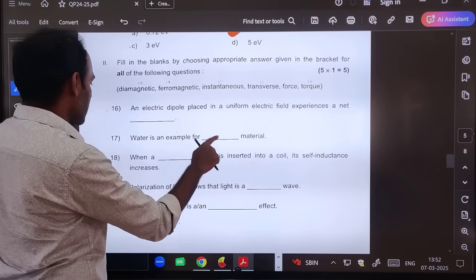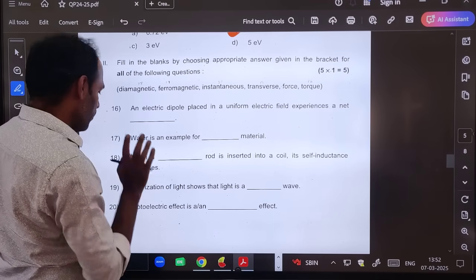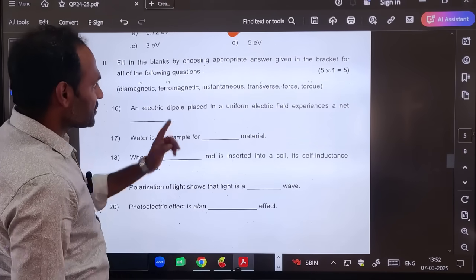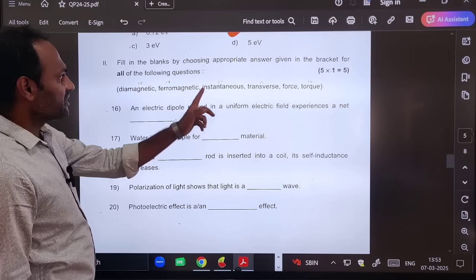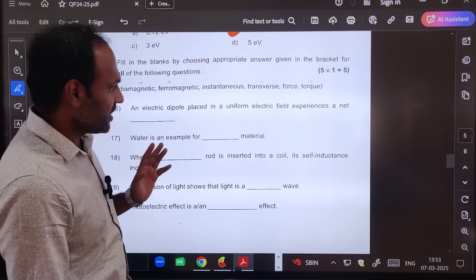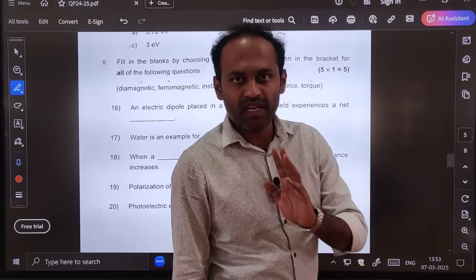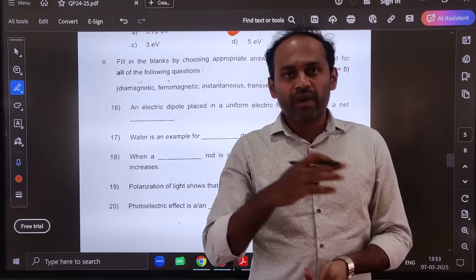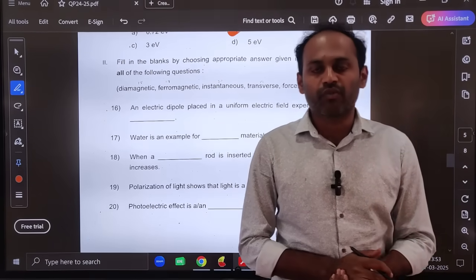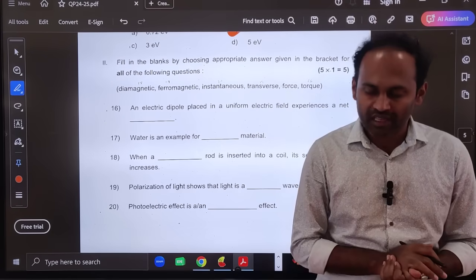So first one torque, second one diamagnetic, third one ferromagnetic, fourth one transverse in nature, fifth one instantaneous. So these are the key answers of fill in the blanks as well as MCQs. Hope you all have done good. We will again meet in the next video. Thank you so much for watching and supporting the channel.